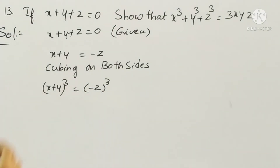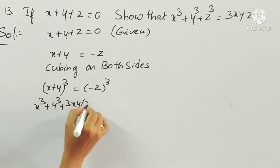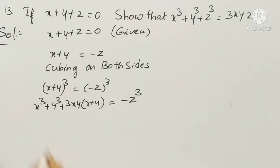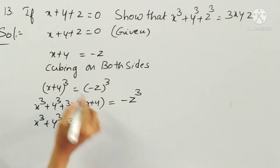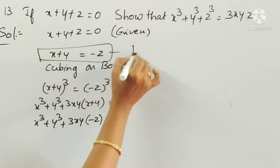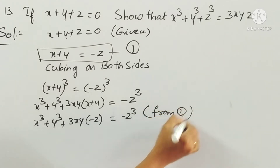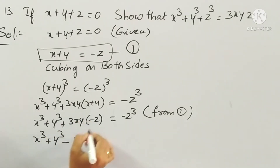Expanding: x cube plus y cube plus 3xy(x plus y) is equal to minus z cube. Now substituting x plus y equals minus z in the place of (x plus y), we get x cube plus y cube plus 3xy(minus z) is equal to minus z cube, which gives x cube plus y cube minus 3xyz equals minus z cube.